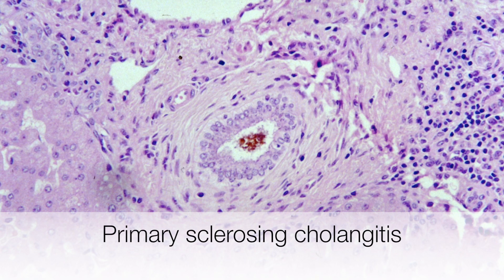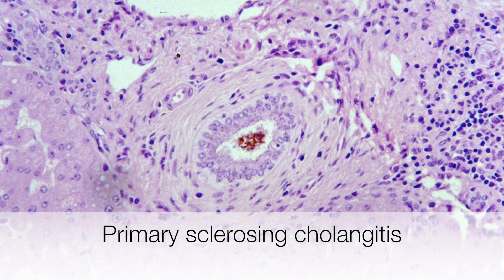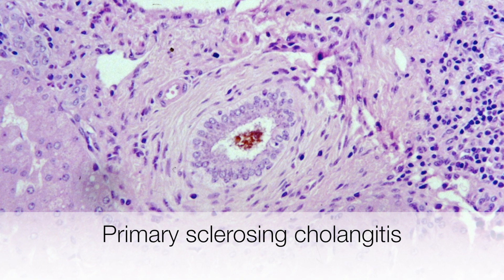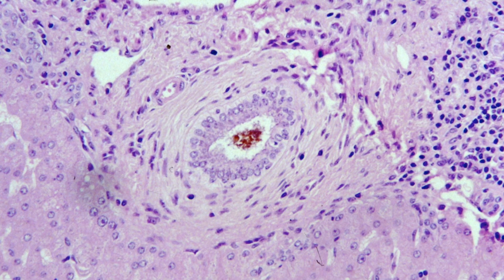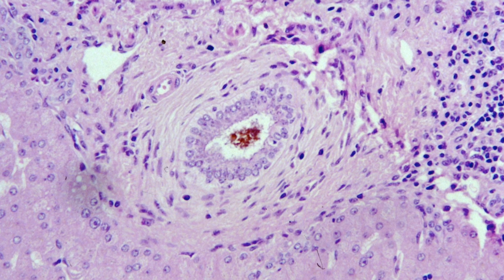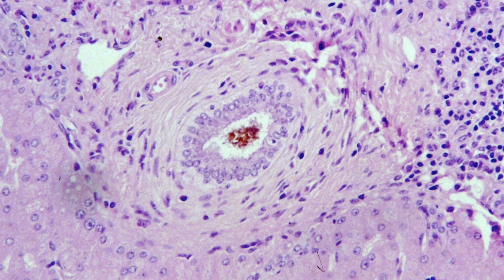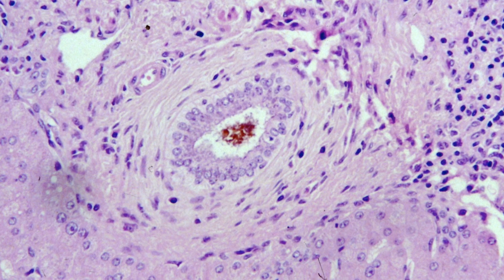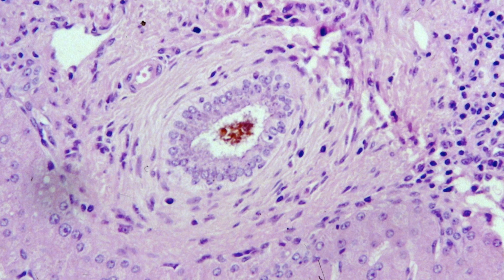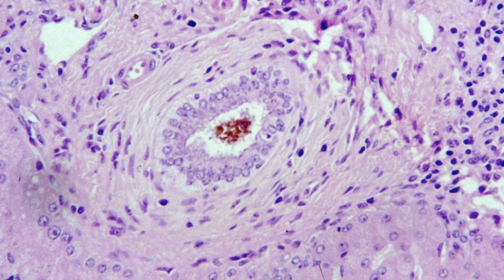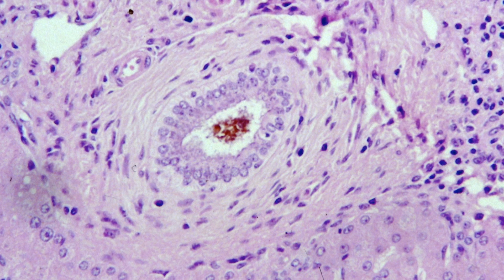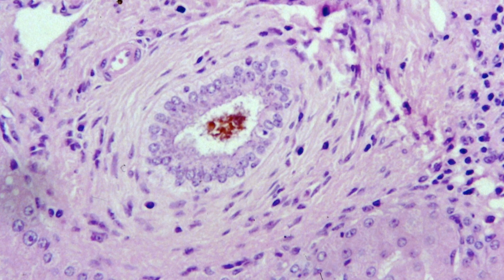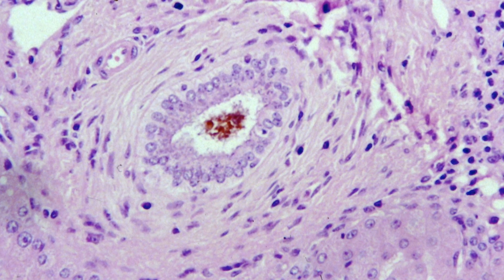At the center of the picture here is a bile duct surrounded by concentric rings of collagen. This is an example of primary sclerosing cholangitis, a condition characterized by inflammation of the bile ducts resulting in deposition of collagen around them, which will over time occlude and finally destroy the bile ducts. So this is an example of a destructive type of sclerosis.